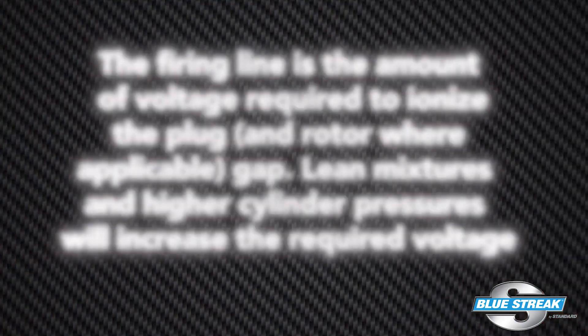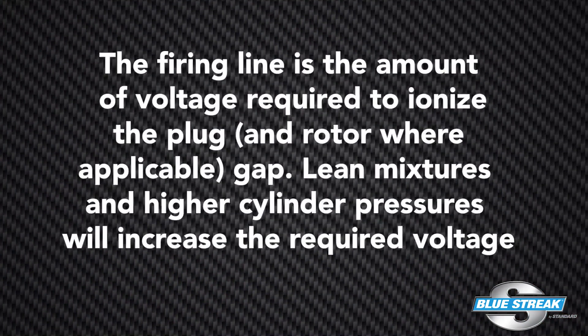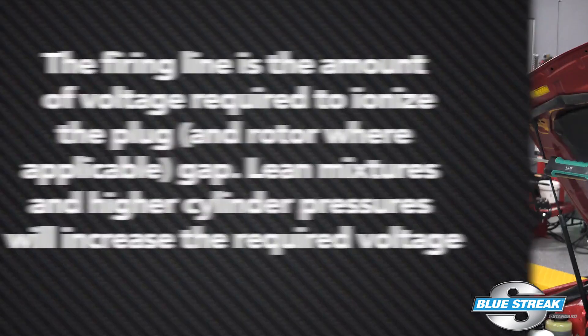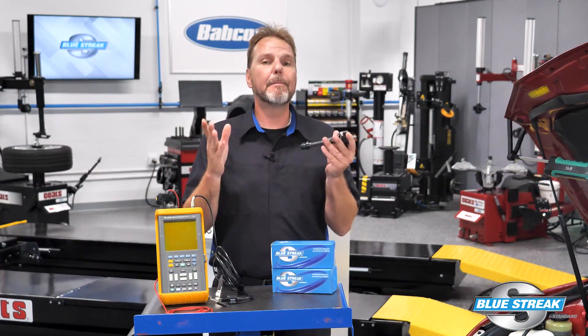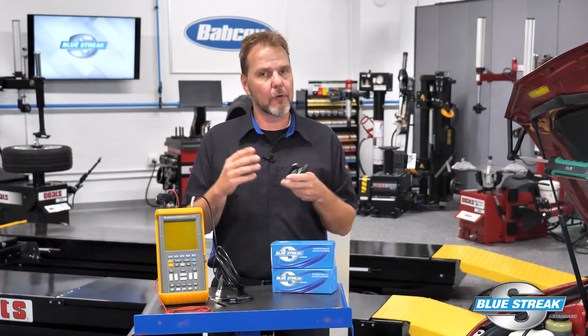The firing line is the amount of voltage required to ionize the plug gap. Lean mixtures and higher cylinder pressures will increase the required voltage. Once the gap is ionized, the burn line is where spark is occurring across the plug.